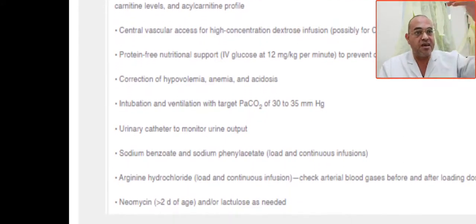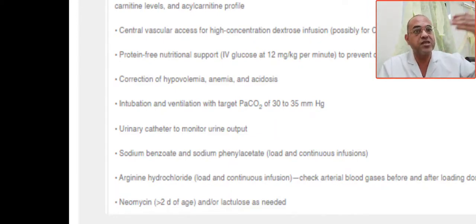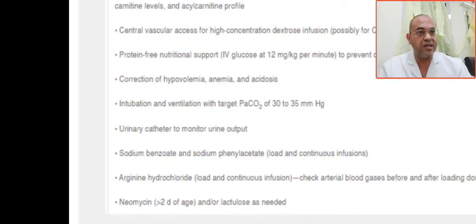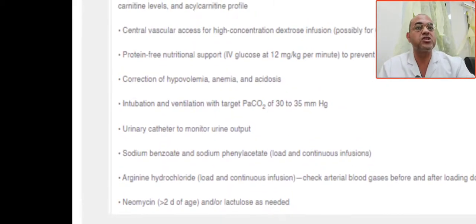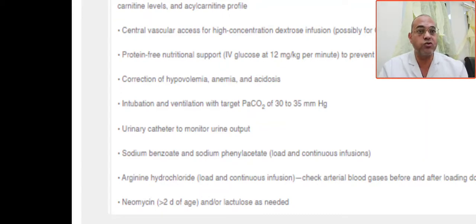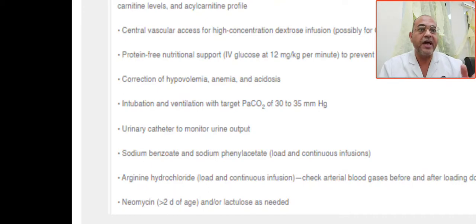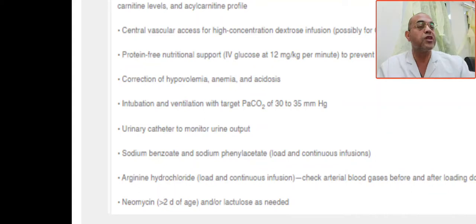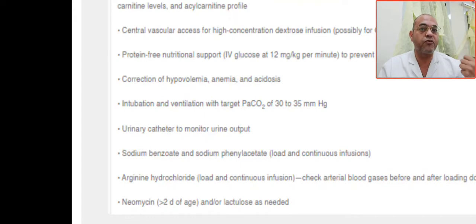Correct hypovolemia, anemia, and acidosis, as the baby presents in metabolic crisis like shock. Give a volume expander or inotropes for hypovolemia, blood for anemia. Intubate and keep the CO2 between 30 to 35 mmHg. Monitor the patient clinically and biochemically and insert a urinary catheter to monitor urine output, since acidosis or hypoxemia leads to poor tissue perfusion.